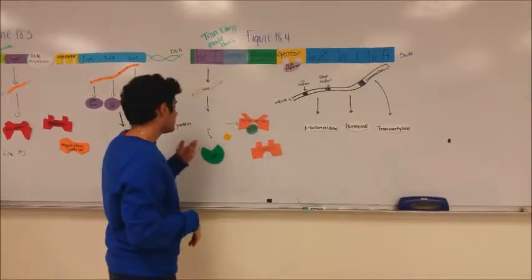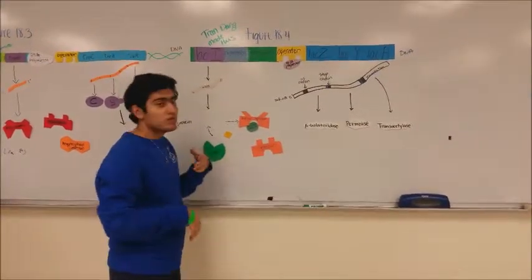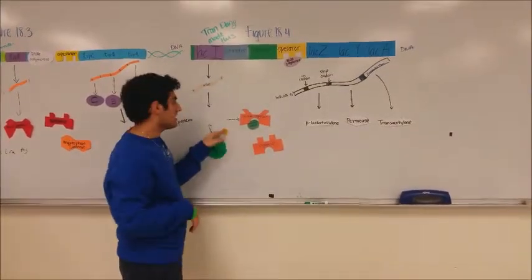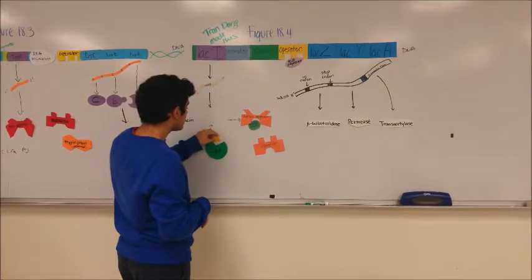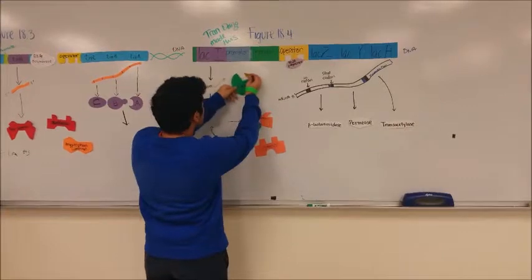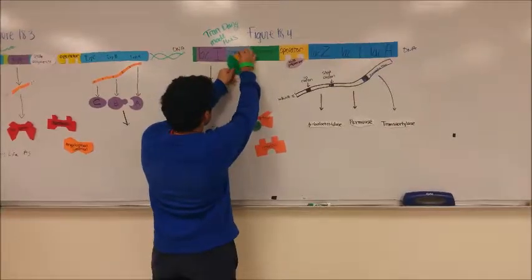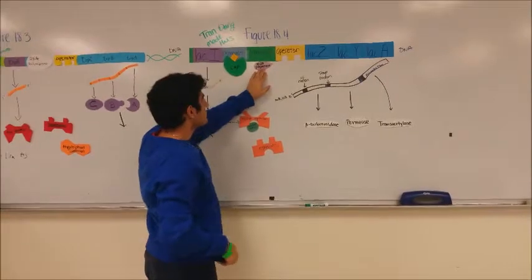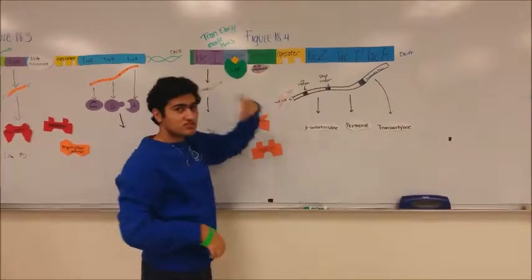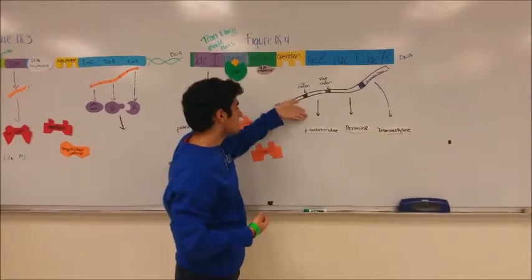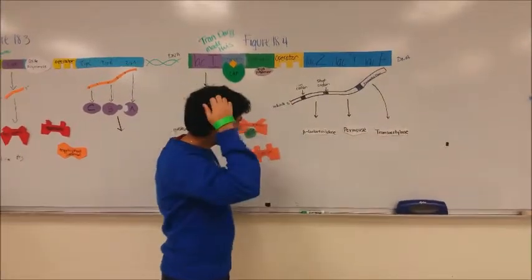Now I'm going to talk about CAP. Basically, when there are low levels of glucose, there are high levels of cAMP. With that, cAMP binds to CAP, which makes it into the active form and changes its shape. It goes and binds upstream of the promoter region, right here. This basically allows RNA polymerase to transcribe the genes faster and more efficiently, leading to the production of these enzymes.